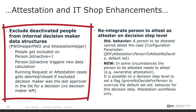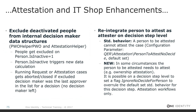Some more attestation in IT shop features. You might remember that from previous versions of the Identity Manager, there was always the issue that deactivated decision-makers were seen in decision structures. The reason for that is that it was a person entry somewhere in a view like PWO helper PWO and attestation helper. Both are responsible to show decision-makers for specific decisions. And in version 8, for the first time, we just exclude now deactivated people.